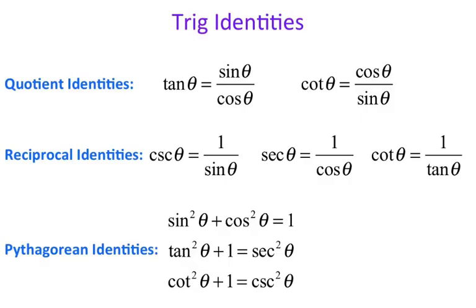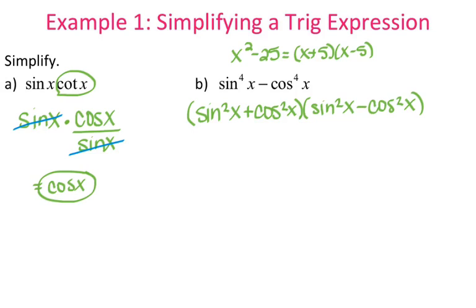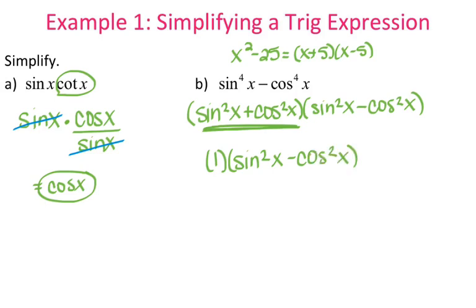Now let's go back to the identities and see if we can make any substitution. We have sine squared and cosine squared, so we can use the first Pythagorean identity, which states that sine squared plus cosine squared equals 1. That's exactly what we have here, so that expression equals 1. So we have 1 times sine squared of x minus cosine squared of x.